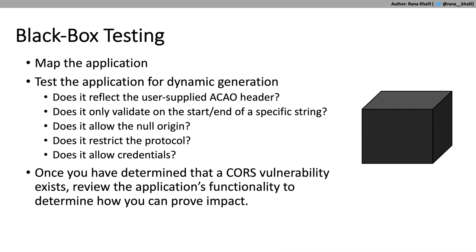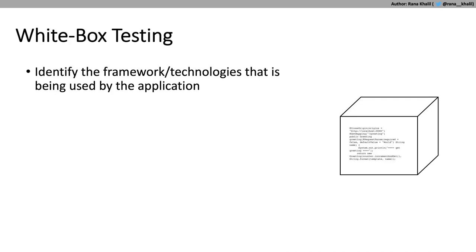Once you've determined there is a CORS vulnerability, review the application's functionality to determine how to prove impact. Sometimes you need to combine it with another vulnerability or a specific application feature. For example, if the application stores API keys in the user interface, you could use the CORS misconfiguration to extract that API key and gain access to the application — which demonstrates a complete account takeover and makes your report much more serious. In the next section we'll cover how to develop scripts that serve as proof of concept.